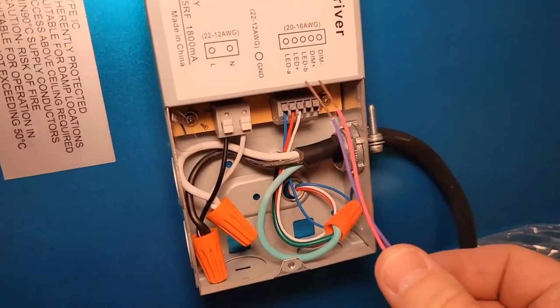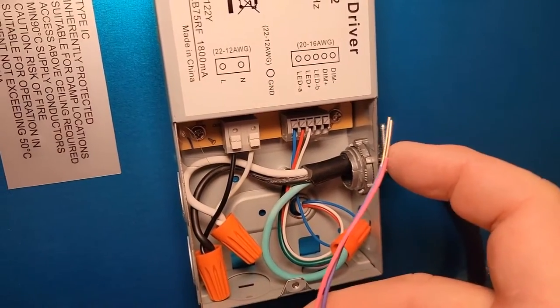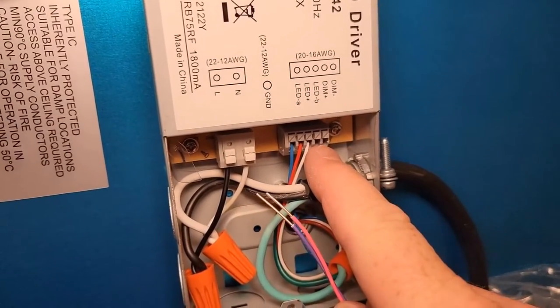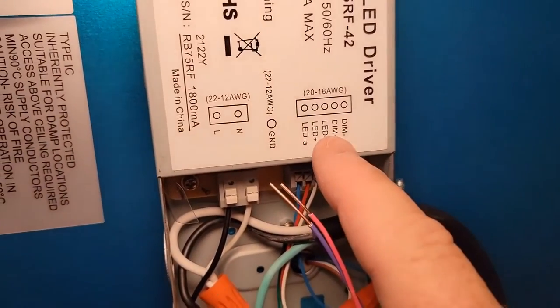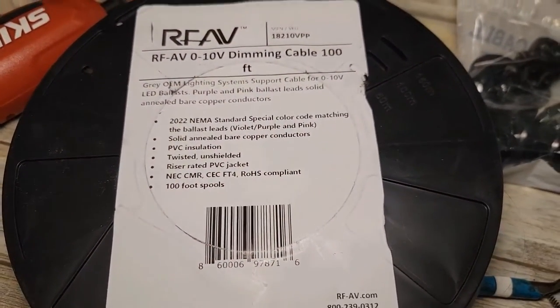Now if I wanted to run in my own dimming wires, they're stripped too much. I'd strip them a little bit less. But then you would put them into those terminal strips right there. Dim plus and dim minus. And that's the type of wire you would need. This is 18 gauge.